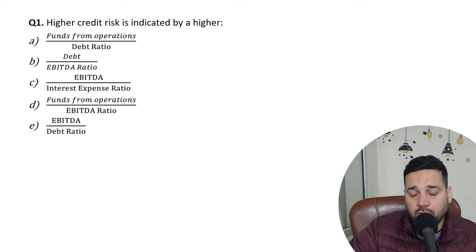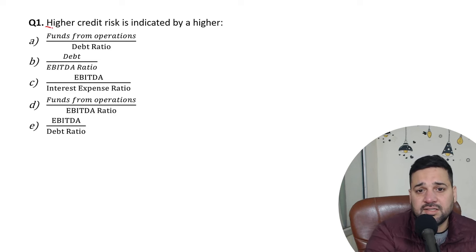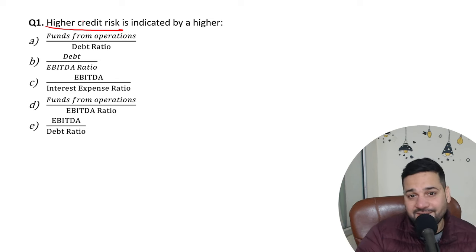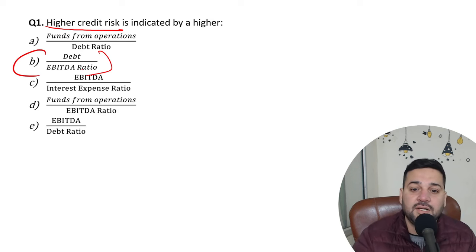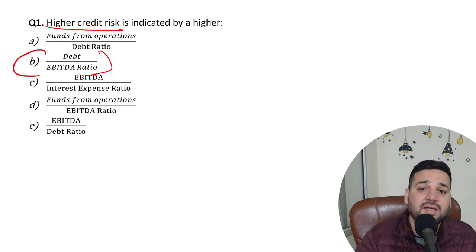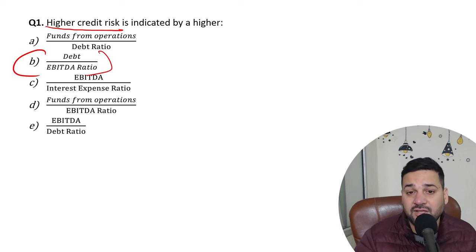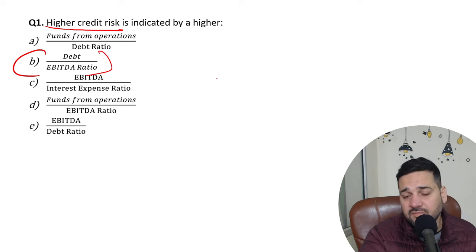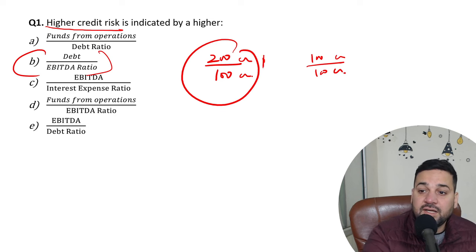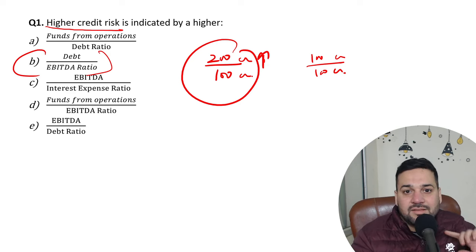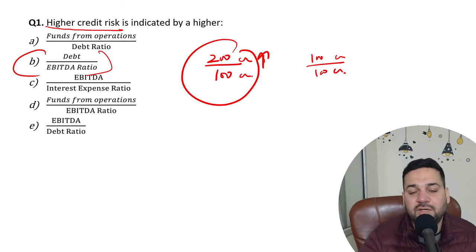First question: High credit risk is indicated by a higher what? So, what is credit risk? When debt is very high compared to EBITDA, the chances of default increase. For example, if EBITDA is 100 crores and debt is 200 crores versus debt being only 100 crores — the higher the debt-to-EBITDA ratio, the higher the chances of default. So debt-to-EBITDA ratio is the correct indicator of higher credit risk.